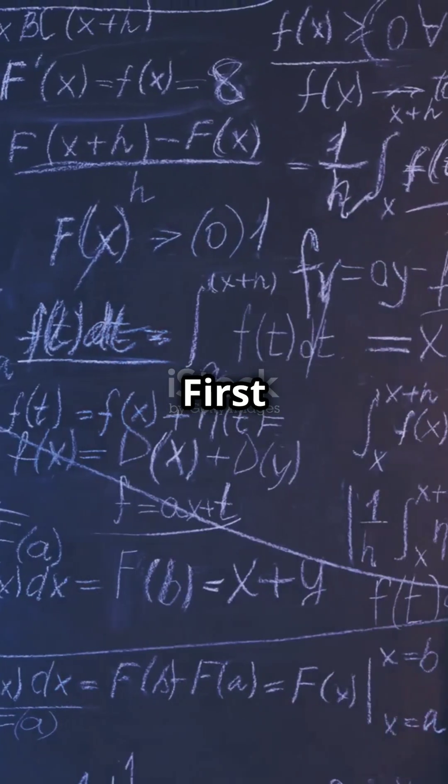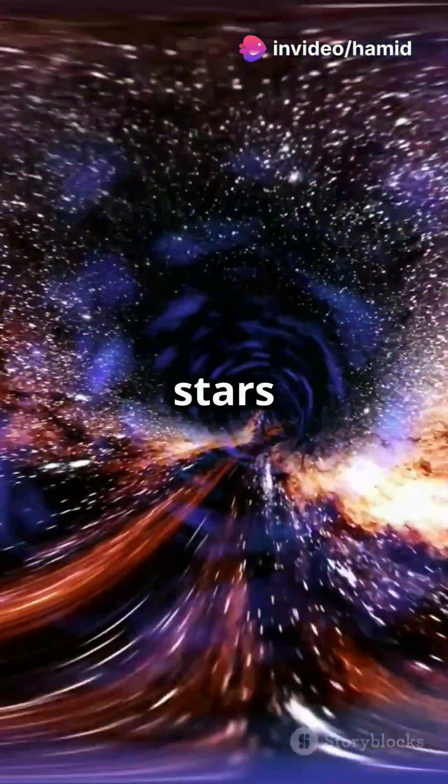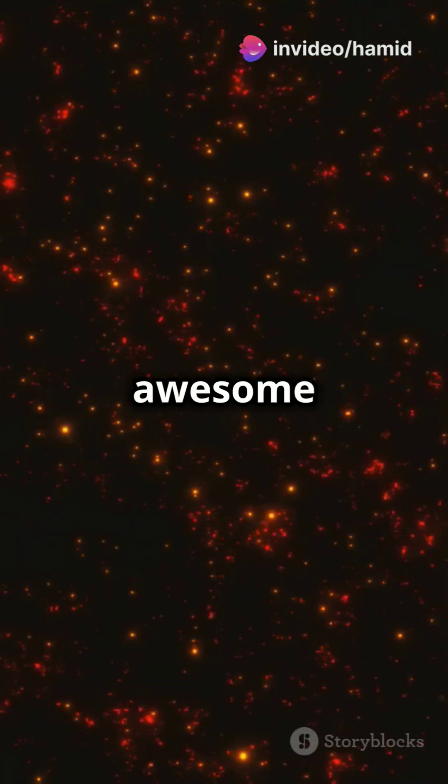Scientists use two main theories to explain the universe. First up, general relativity. Think of it like a cosmic trampoline. Big objects like stars stretch the fabric of space-time, creating gravity. It's awesome for big stuff.